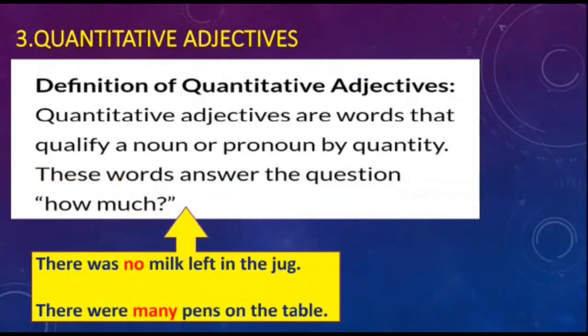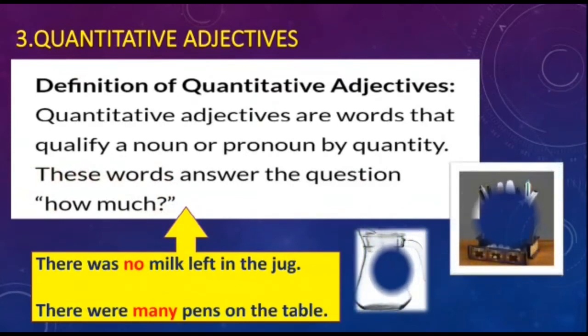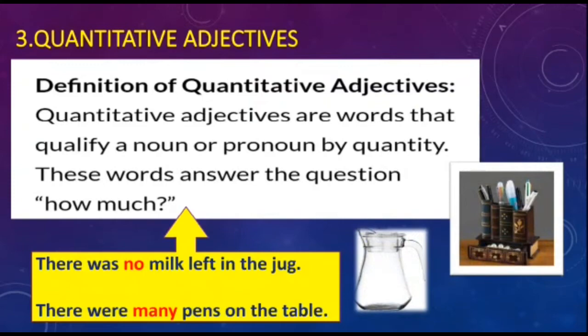'There were many pens on the table' — 'many' tells us the quantity of pens on the table. So quantitative adjectives talk about the quantity of a noun or pronoun.